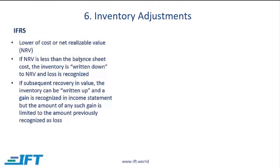At times, inventory values come down — for example, you have been purchasing inventory at $10 per unit, but now the price at which you can sell is less than $10. The principle of conservatism demands that you write down your inventory. So what are the rules around writing down inventory?